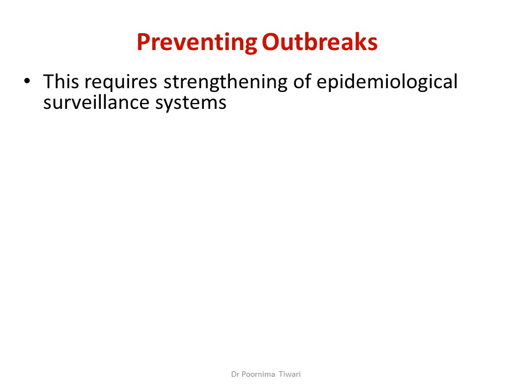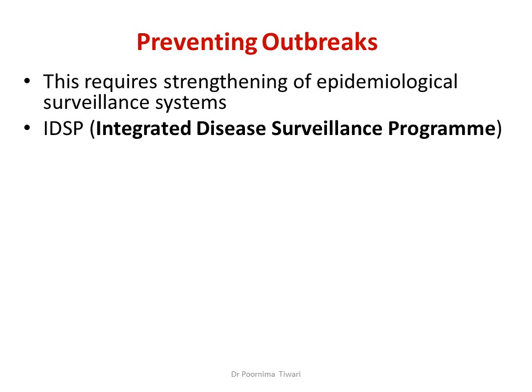Preventing outbreaks requires strengthening the epidemiological surveillance system — keeping an eye on the incidence of diarrhea, recognizing any unusual rise in cases early, and acting immediately to stop the outbreak in the area before it becomes larger. One such system in India is the Integrated Disease Surveillance Program, where diarrhea cases are reported to controlling authorities regularly.